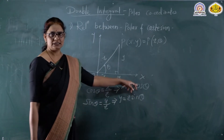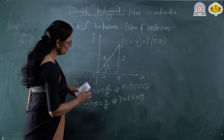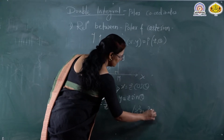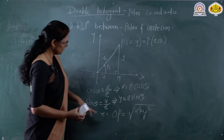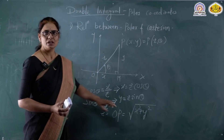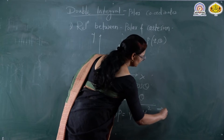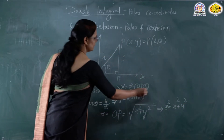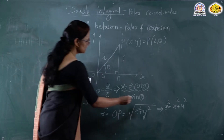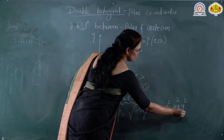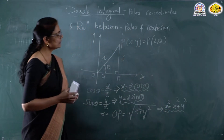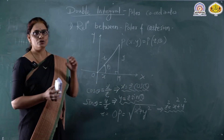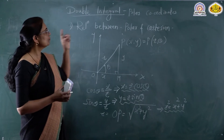So here we express x and y in terms of r and theta. Similarly, the distance OP equals, by the distance formula, the square root of x² + y². So OP equals r, giving us r² = x² + y². These three equations — x = r cos theta, y = r sin theta, and r² = x² + y² — give the relation between (x, y) and (r, theta). Remember these three equations; they are useful when solving problems of double integrals using polar coordinates.